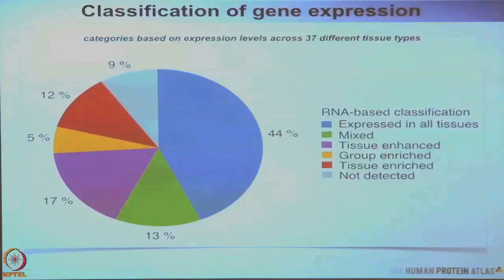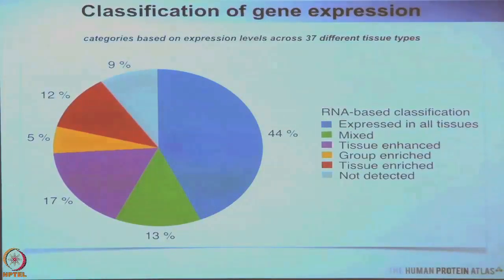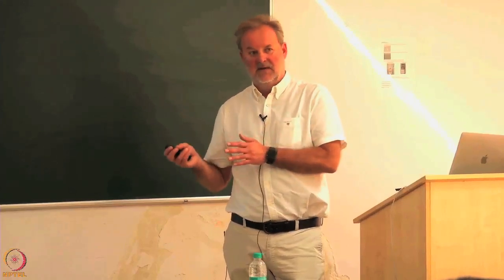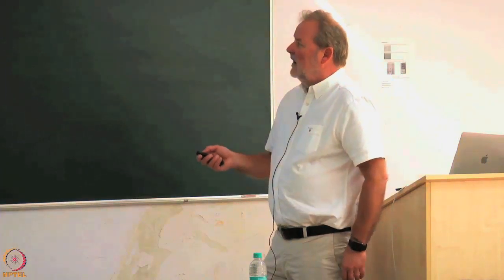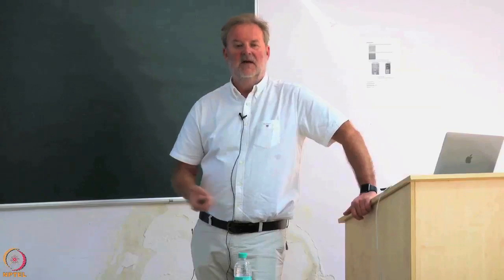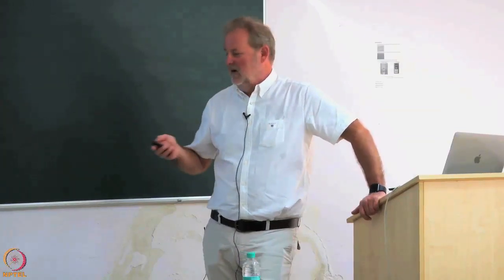We learned that about half of our protein-coding genes encode housekeeping proteins — 44 percent are expressed in all tissues, building cell structure, enabling cell division and cell integrity. Then there is a mixed bag, and then there are tissue type-specific proteins — the most interesting ones, expressed only in one tissue or much more highly expressed in certain tissues — which are responsible for the special functions of different tissues and will be interesting for disease biomarkers. About 9 percent showed no RNA in our 37 tissue types, which could be pseudogenes, permanently silenced genes, or genes expressed in tissues we did not have such as inner ear or olfactory plate.